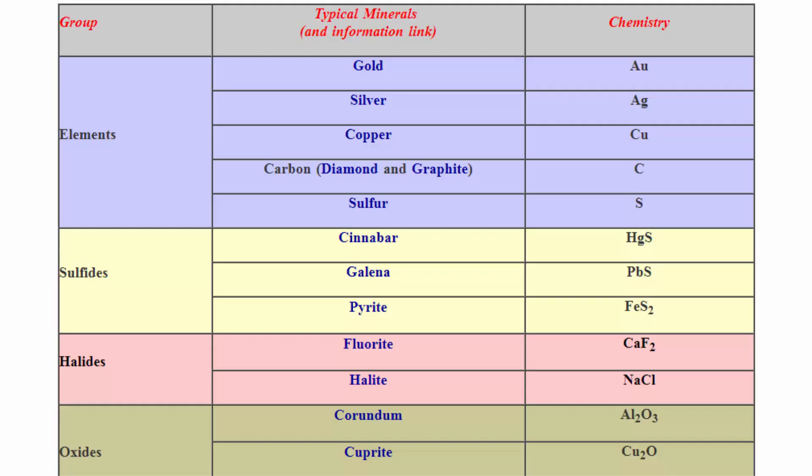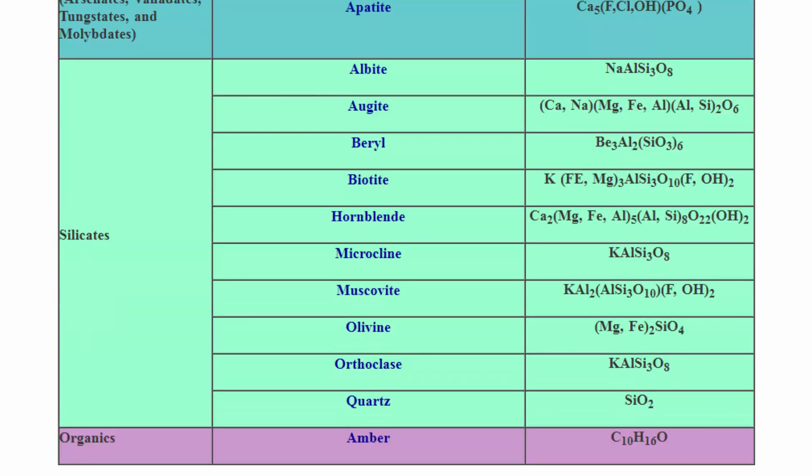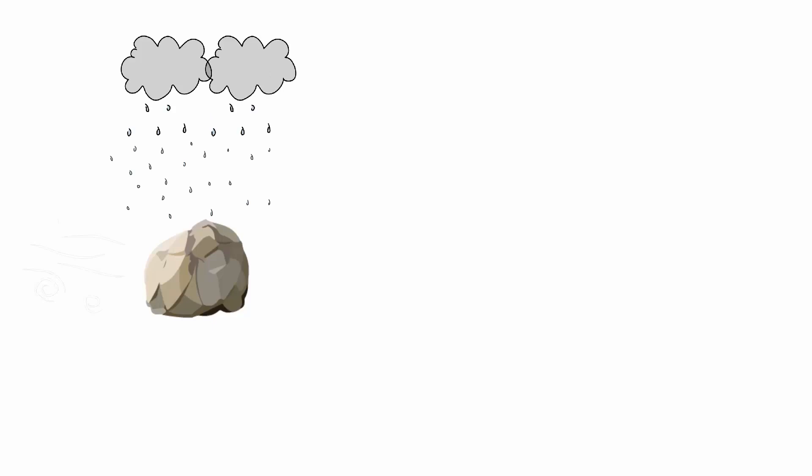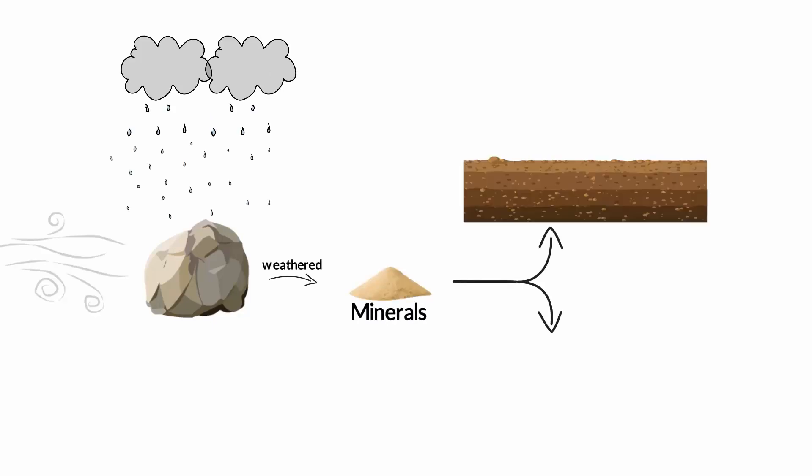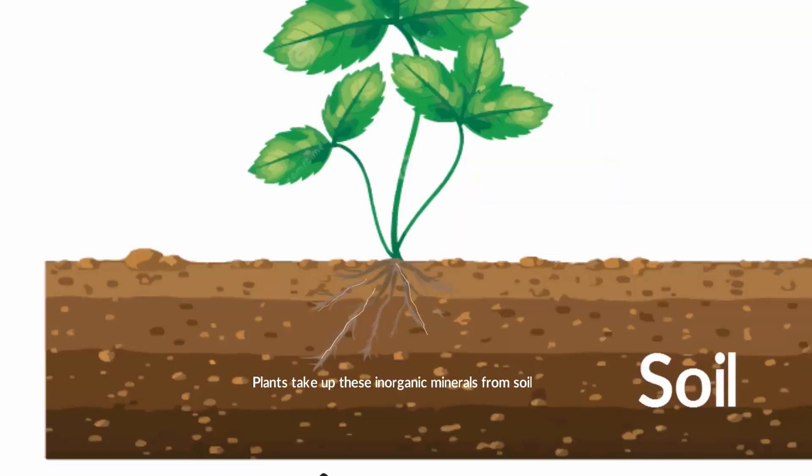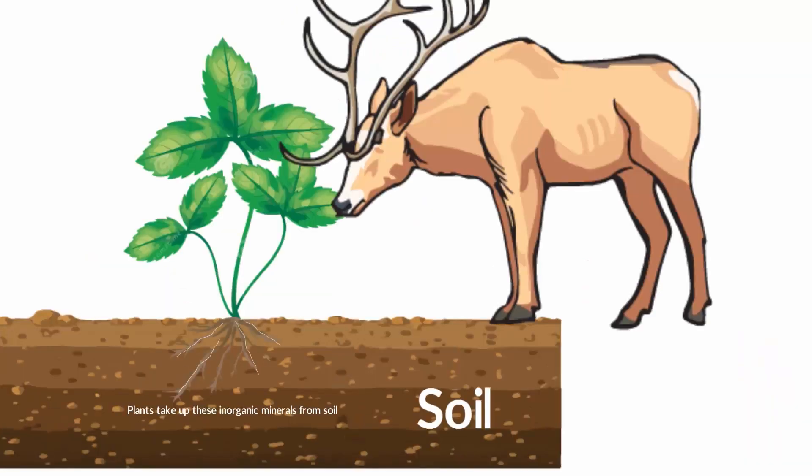If you look at these minerals, they usually occur in rocks. Over time, rain and wind cause rocks to release these minerals. Now, these inorganic minerals are then distributed in soil and water. Plants take up these inorganic minerals from the soil. The plants are then consumed by animals.